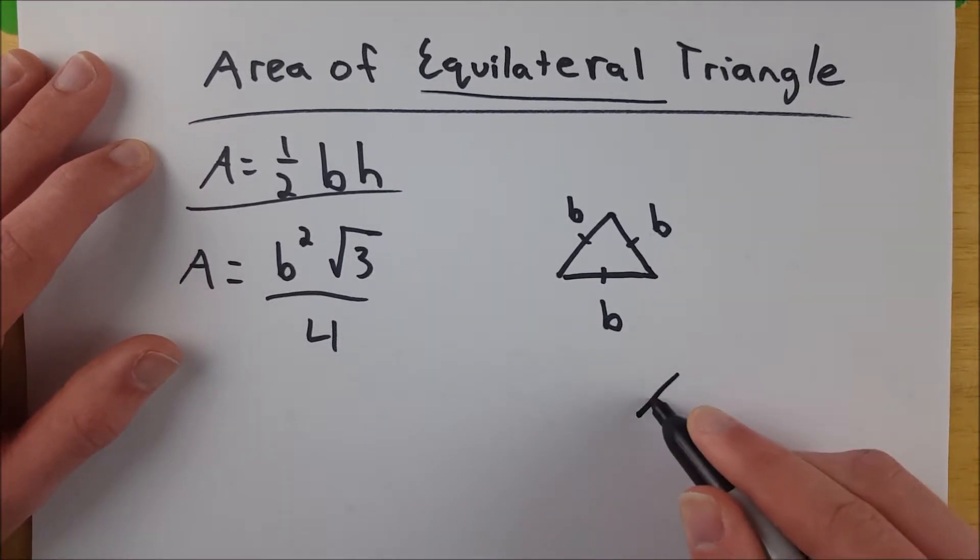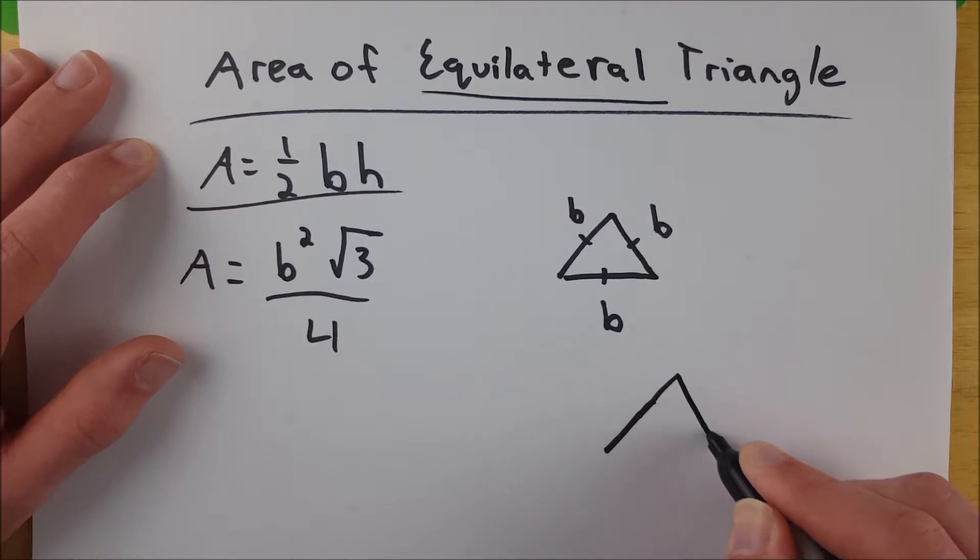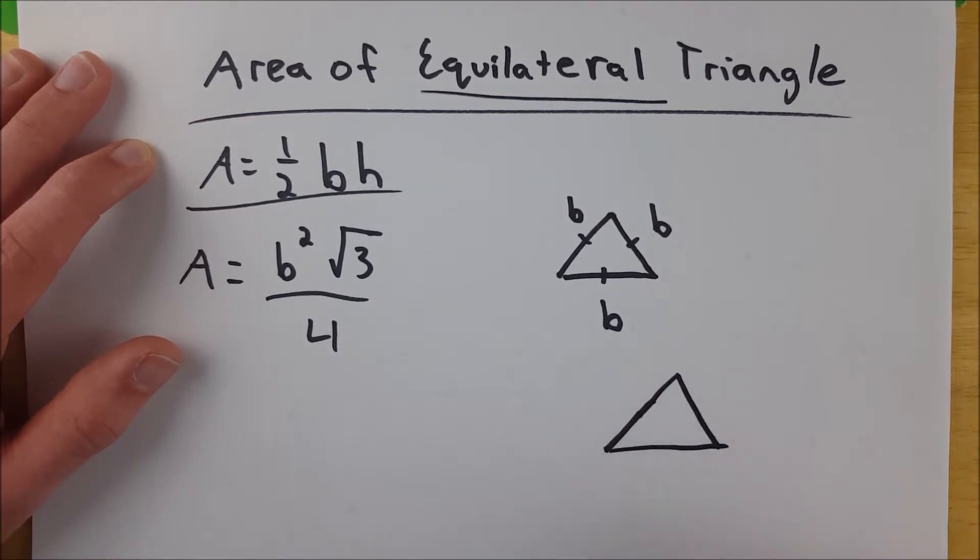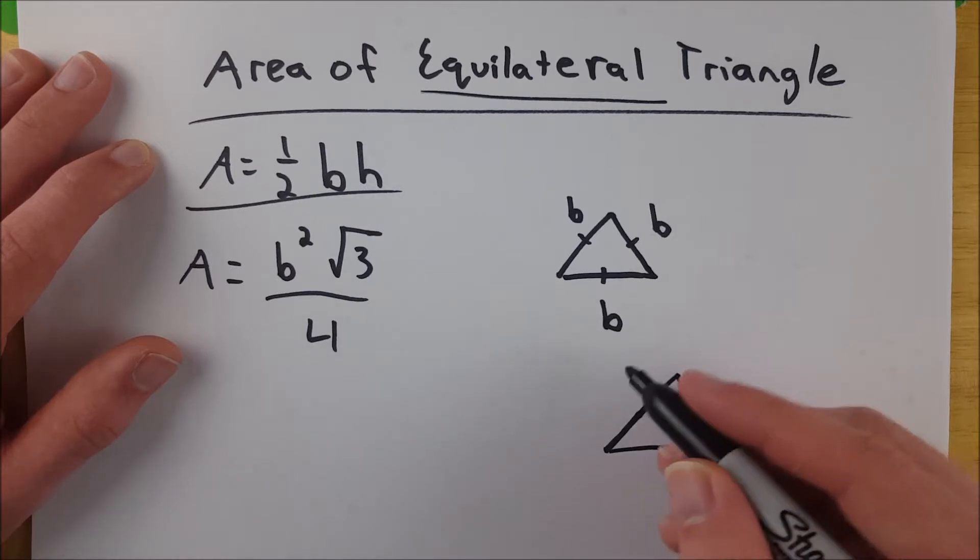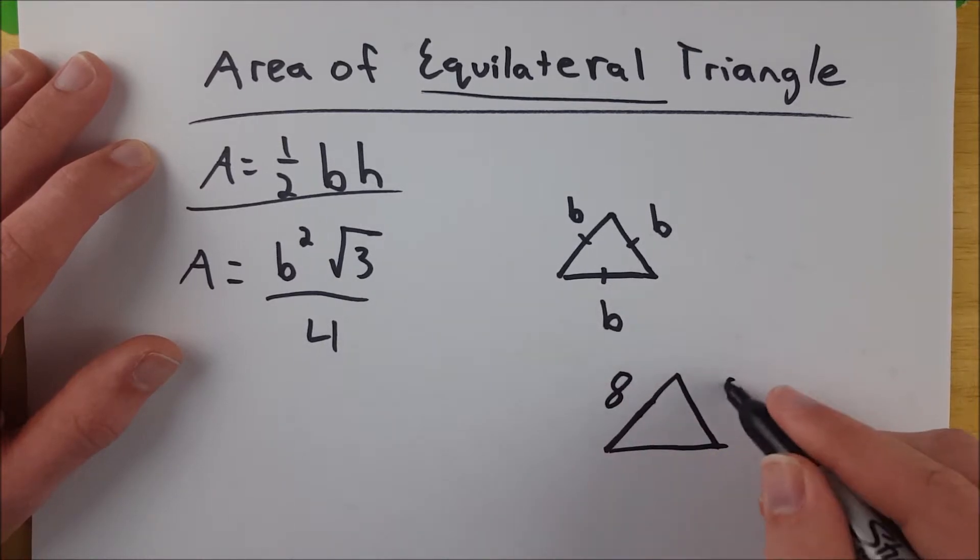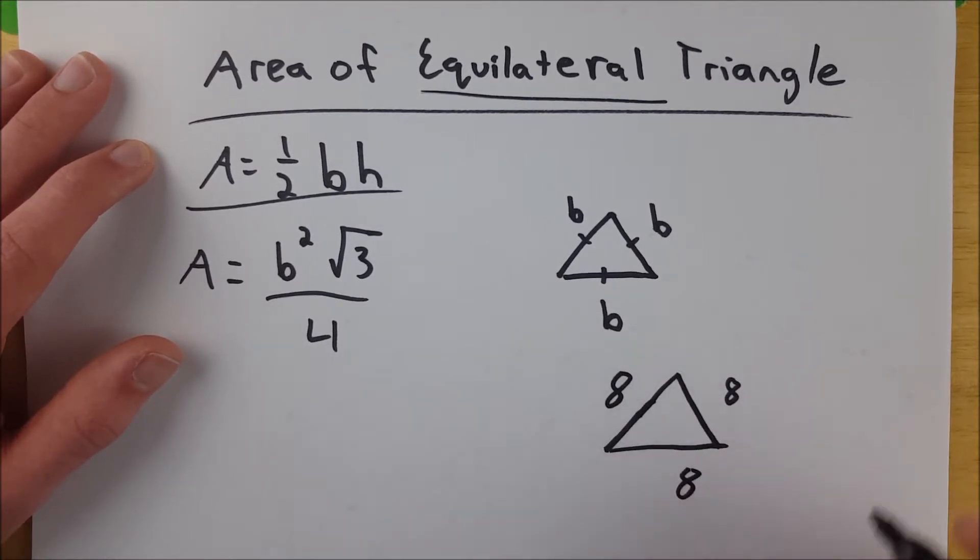Let's say we have an equilateral triangle - it doesn't quite look equilateral in my drawing, but we'll go with it. Let's say it has side lengths eight, eight, and eight. Of course it's equilateral.